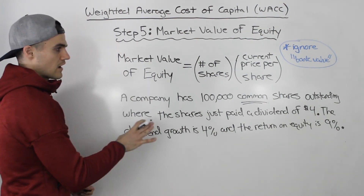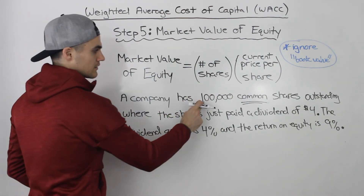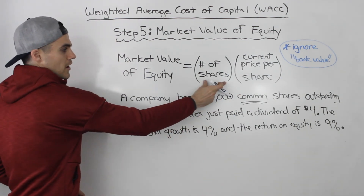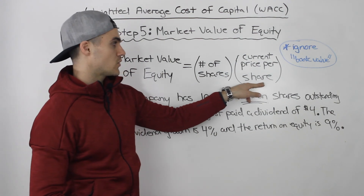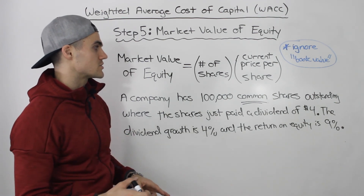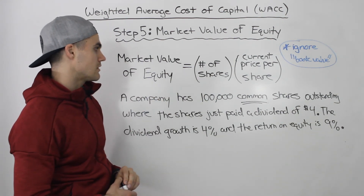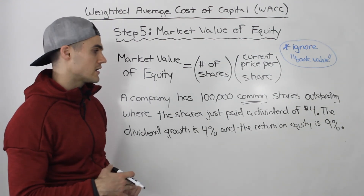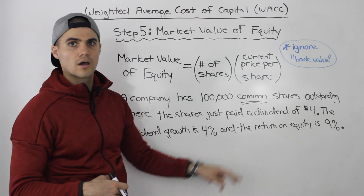We have to find the market value of equity given all of this information. The first input is the number of shares — that's the 100,000 common shares outstanding. But notice that we are not given the current price per share directly. A lot of times questions will just say the stock is trading at $62, and we'd multiply 100,000 by 62. But in this case, we're given information about the dividends, the growth of the dividends, and the return on equity, which is enough to find the price.